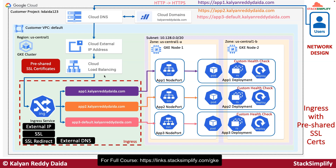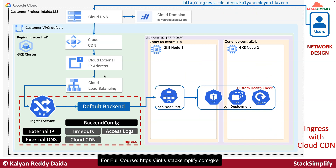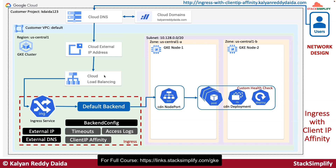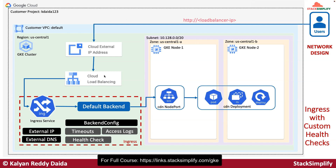We will implement one more demo with pre-shared SSL certificates. After that, we will implement ingress with cloud CDN — content delivery network. We will then implement ingress with client IP affinity and also cookie affinity. From there, we will implement ingress with custom health checks using BackendConfig CRD — rather than using readiness probes directly in deployment, we will use the BackendConfig CRD custom resource to implement health checks for the ingress service.